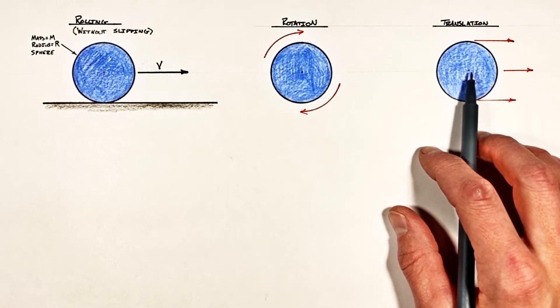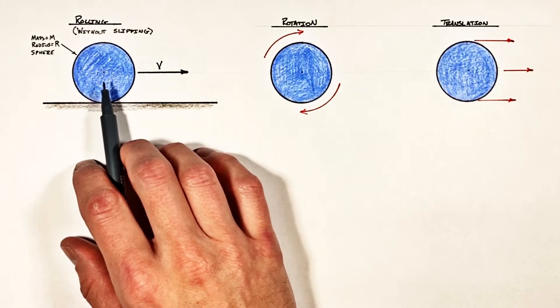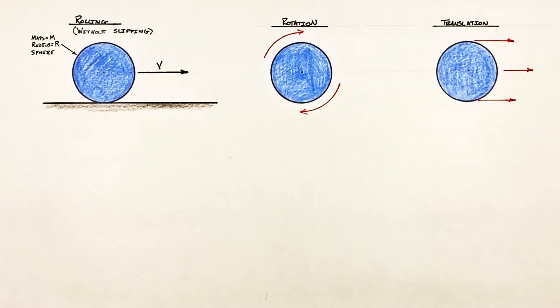Now to find the total kinetic energy of our rolling object, we simply need to take a look at the kinetic energy of each of these two independent types of motion.